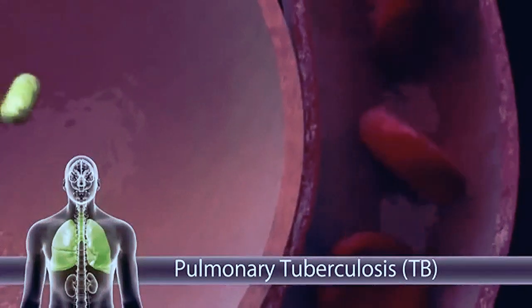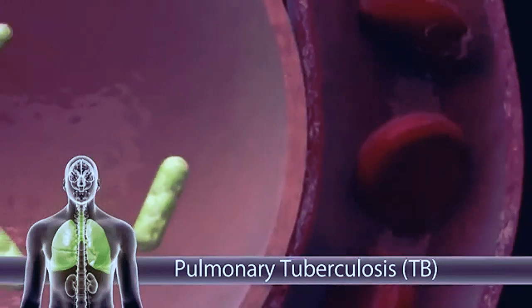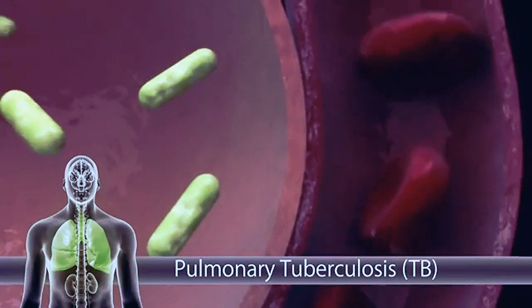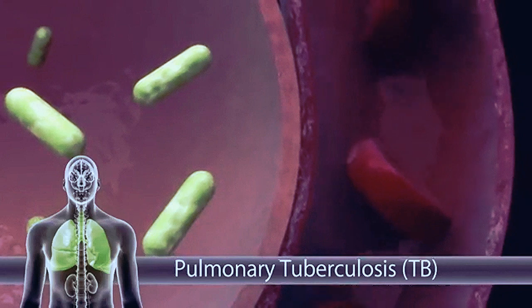When the TB escapes from the granuloma and begins destroying a person's lungs, it's called pulmonary TB.